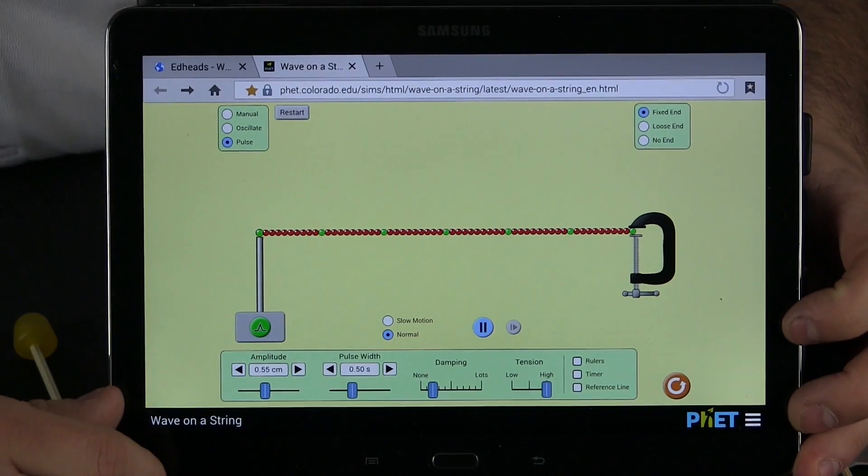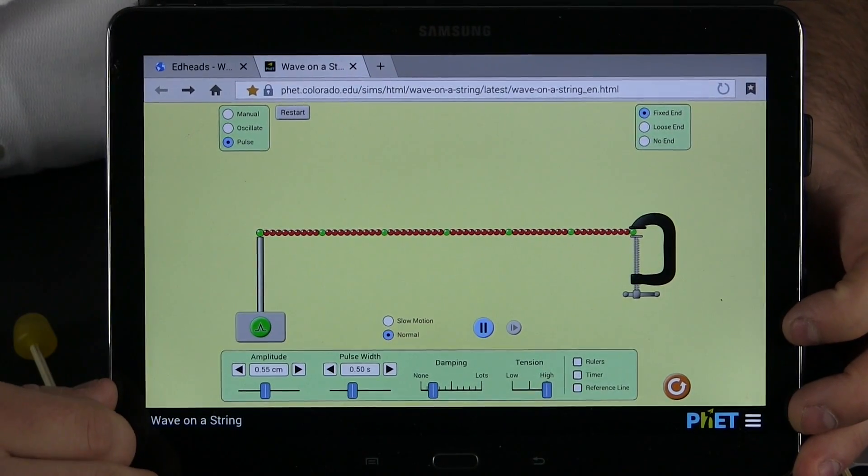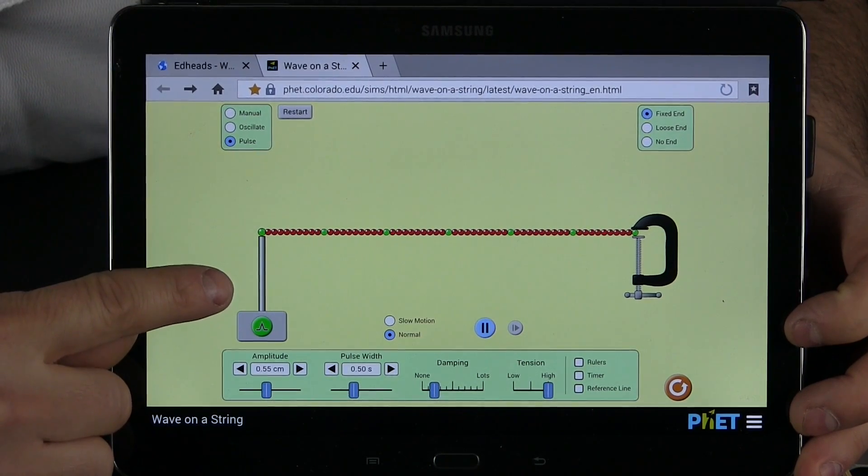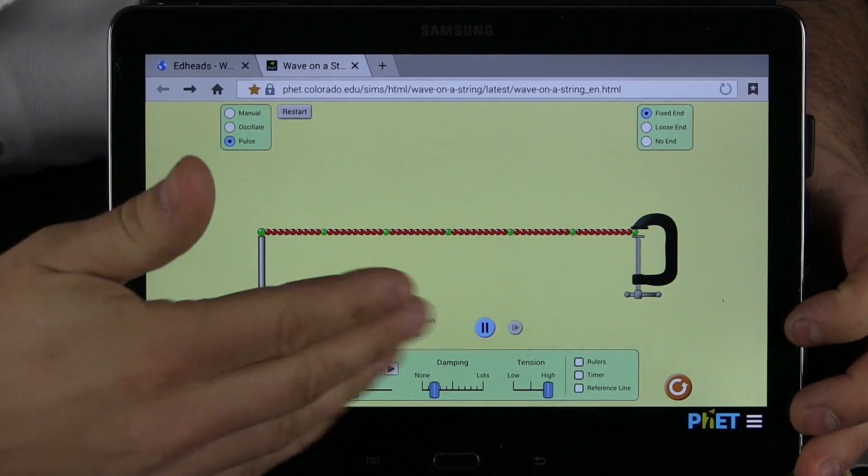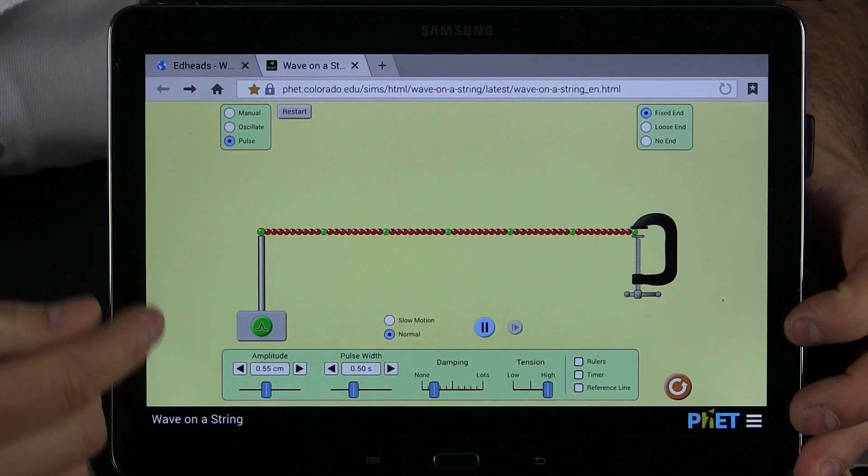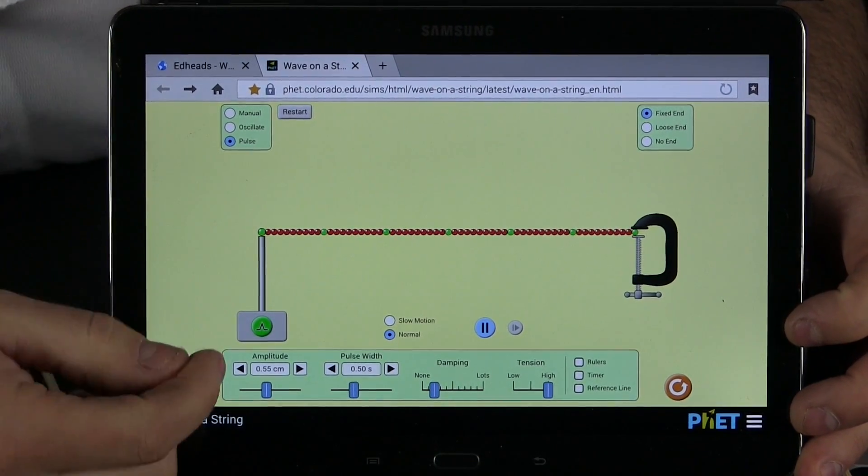The simulation is called wave on a string. So let us take a look and see what it can do. Explore it. Well, I see a wave machine that looks a lot like our wave machine, it is stretched out. And just like we put some energy in our wave machine to see that wave travel, let us put some energy into this wave machine.